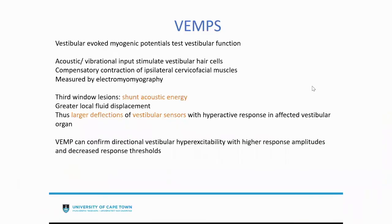Vestibular evoked myogenic potentials (VEMPs) can be used to look at vestibular function. Acoustic or vibrational input stimulates vestibular hair cells, causing compensated contraction of cervical and facial muscles measured by electromyography. In third window lesions, the shunt of acoustic energy creates much bigger fluid displacement and larger deflections of vestibular sensors. VEMPs can confirm directional vestibular hyper-excitability, showing much higher response amplitudes and a reduced response threshold.